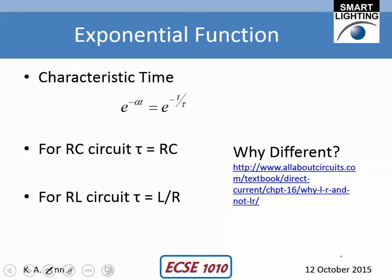Exponential time, often written as e to the minus alpha t or something like that, can be written as e to the minus t over tau, where tau is the characteristic time. This is the time constant.